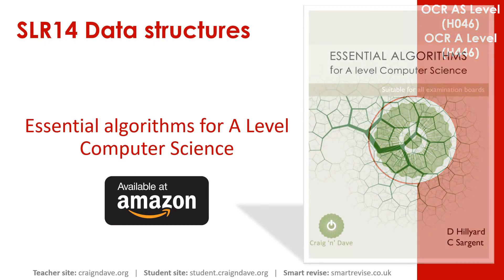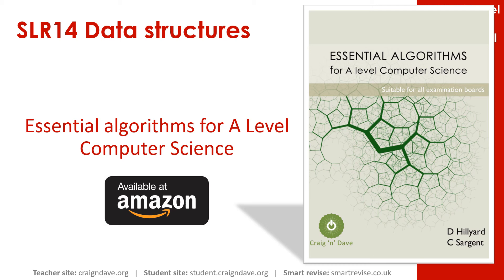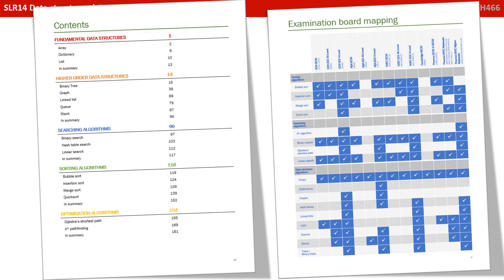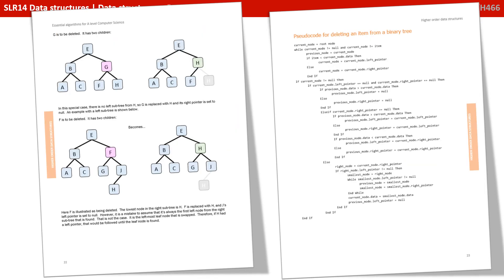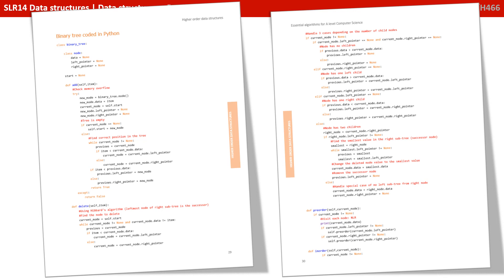Getting to grips with data structures and all the algorithms associated with them is a very tricky area of the course. So we've produced a book called Essential Algorithms for A-Level Computer Science, available on Amazon. It covers all the data structures you need to know about, along with the algorithms you need to perform on them, and covers all the exam boards. We overview each data structure, discussing its typical applications and the operations you can perform on it. We provide a QR code linking to additional resources, and present each algorithm first in simple structured English, then in a diagrammatic format, then in pseudocode, and finally as fully coded algorithms in both Python and VB, so you can code them up and practice them yourselves.